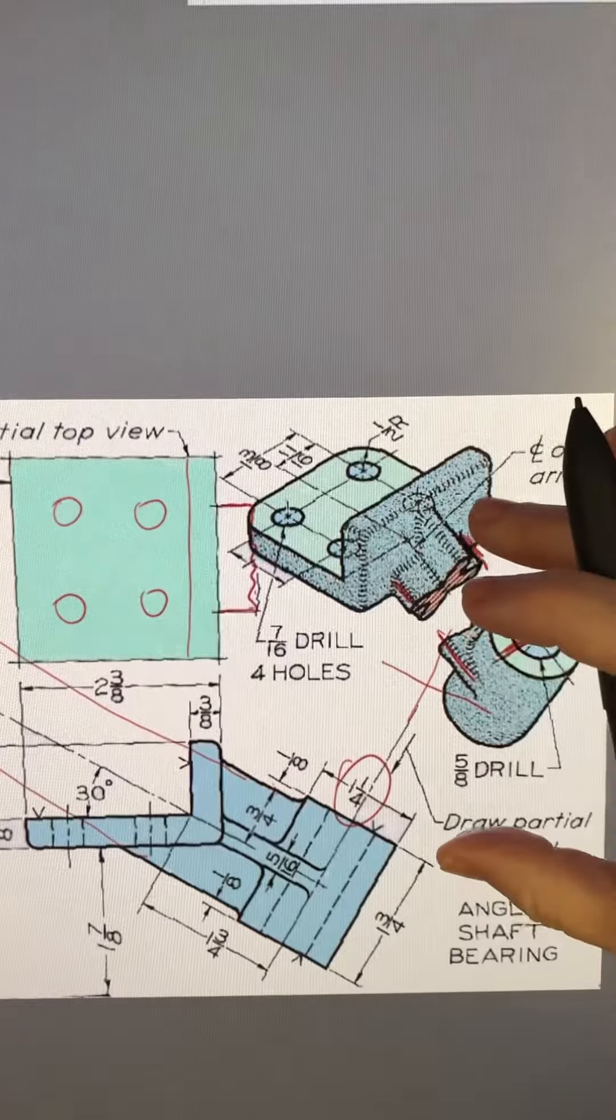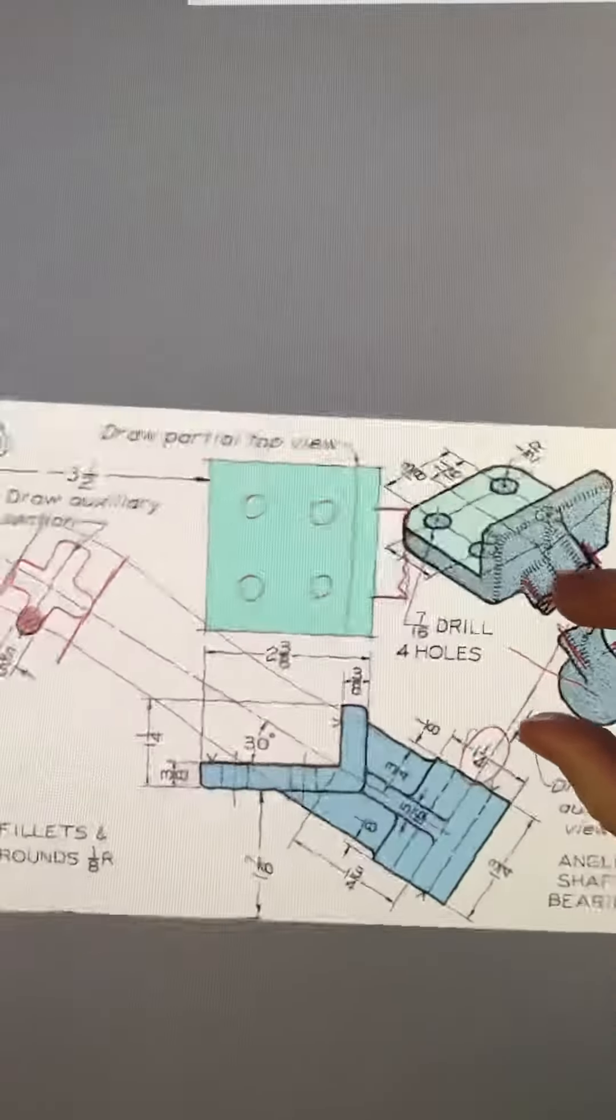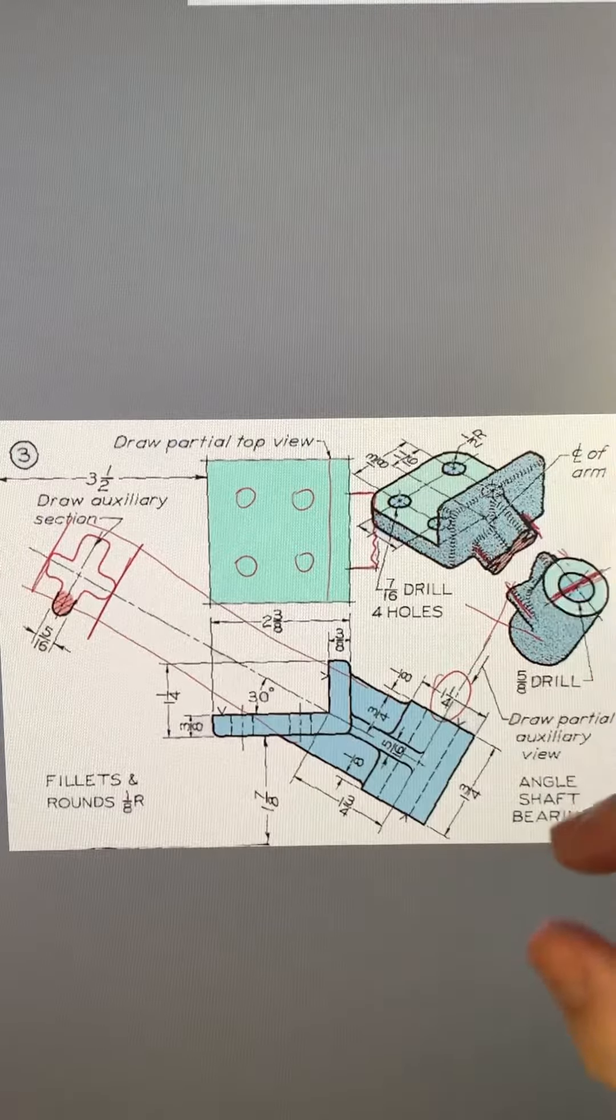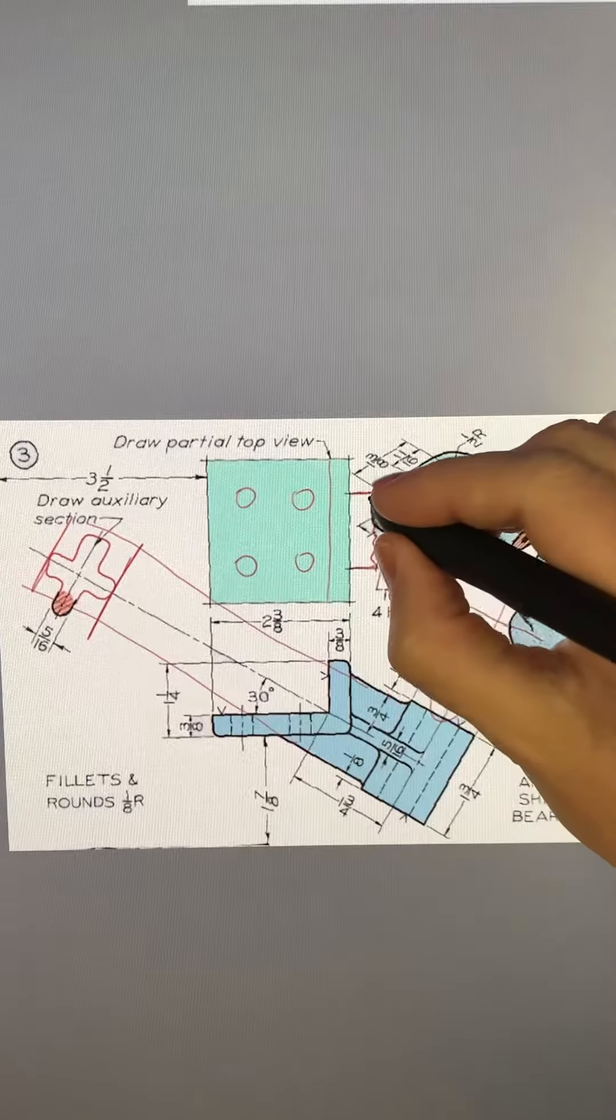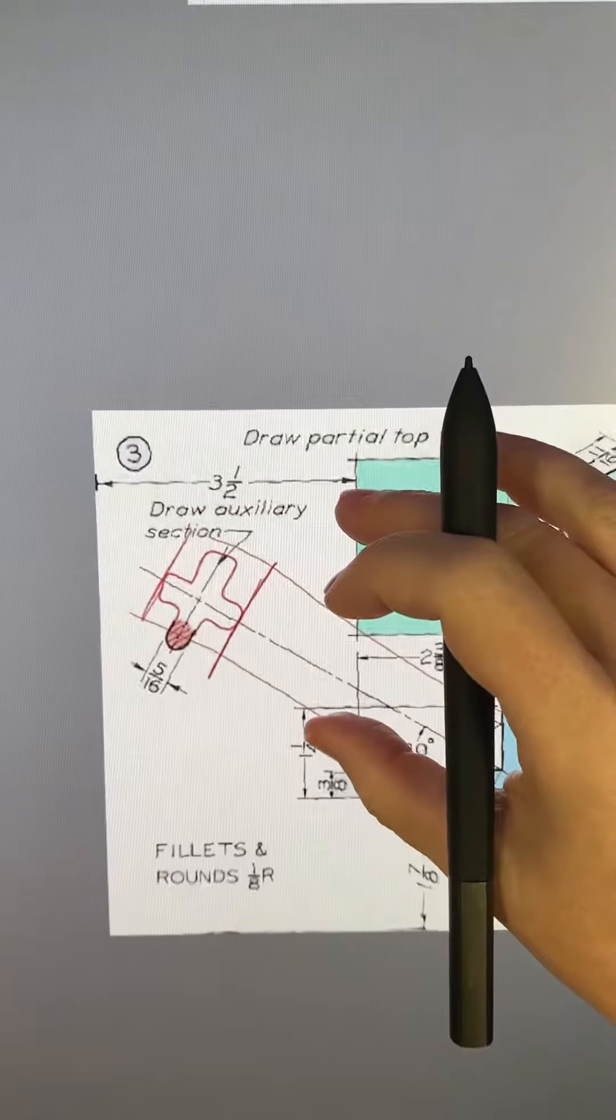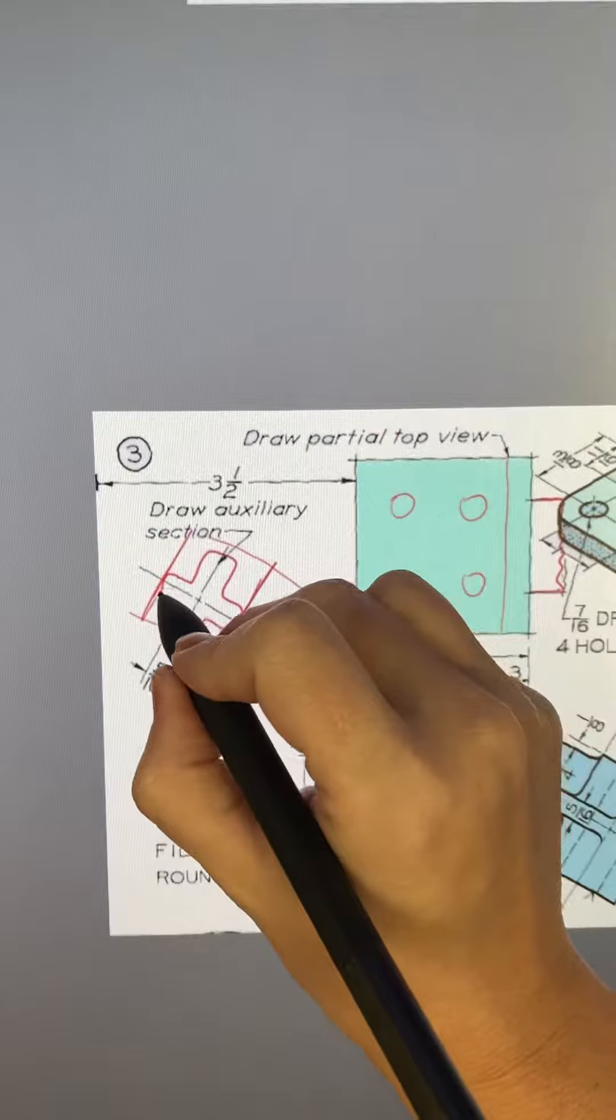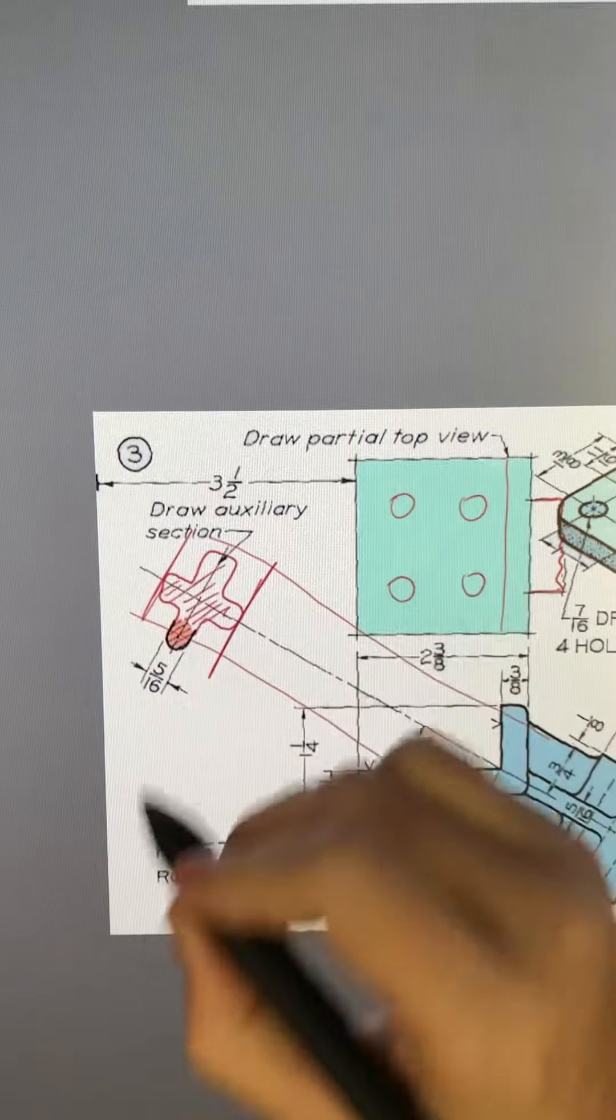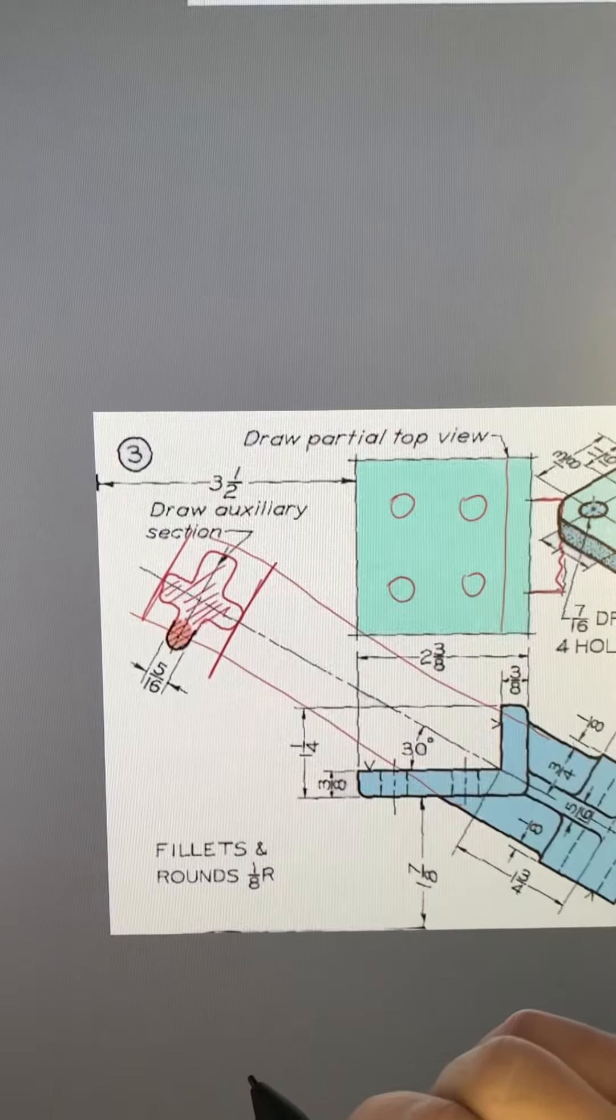Think about that. Make sure that you have all your fillets - there's a lot of fillets on this part. Make sure you pay attention to all the dimensions, remember your brake line, and don't forget to hatch your section. And don't forget the fillets - every corner is rounded on that section view.